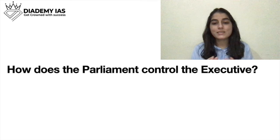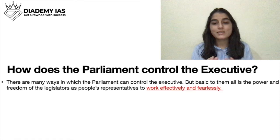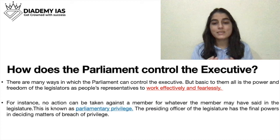How does parliament control the executive? Parliament can exercise this control only if it works fearlessly and effectively. For example, regarding the farmers' bill, if parliament does not raise questions or hold discussions out of fear of the government, there is no question of controlling the executive. Parliament must work fearlessly — asking questions, holding debates and deliberations — to exercise effective control through debates, financial control, approving or refusing laws, and even asking the government to resign.